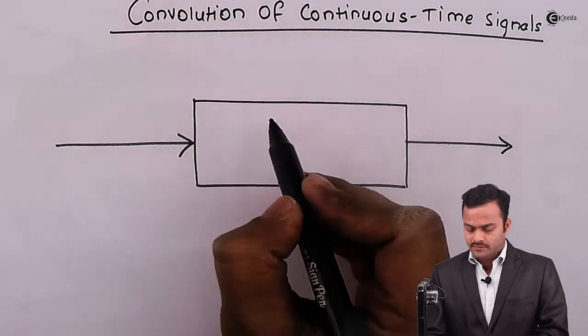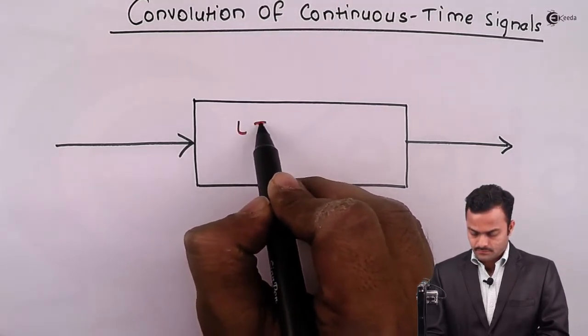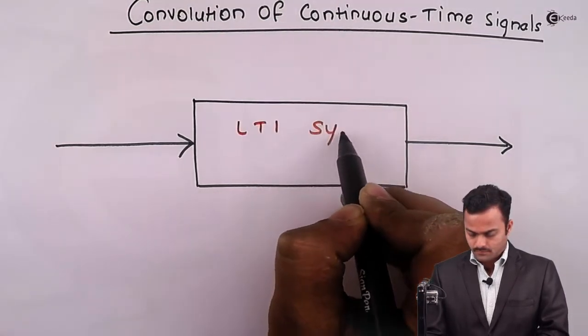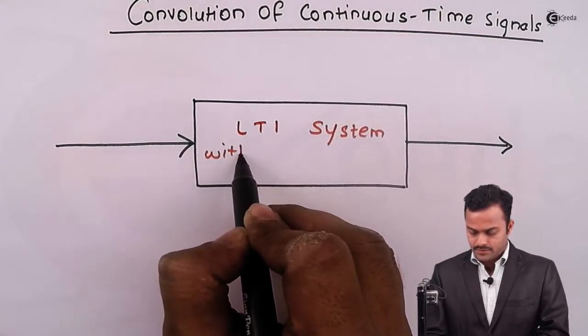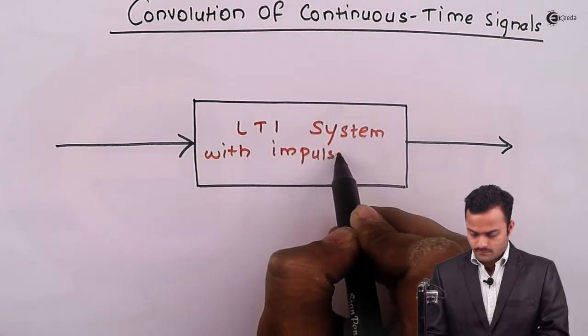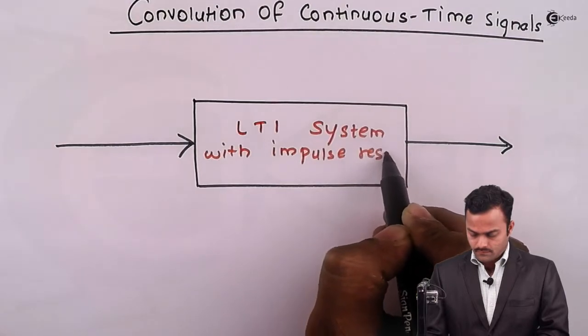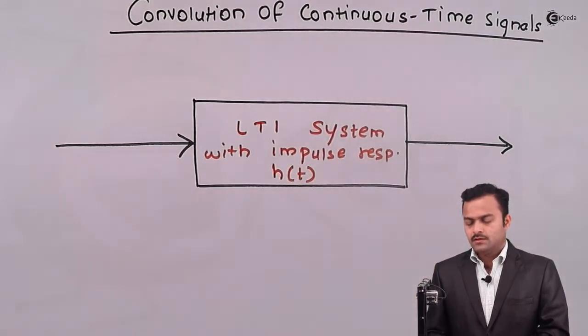So, over here, I am having this system, which is a linear time invariant system. And it is having an impulse response, h(t). To this system,